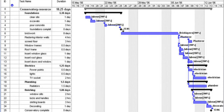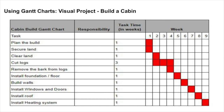A Gantt chart breaks down a production process into all of its key components. Here we have a typical Gantt chart. I have an example of a cabin build. If we ask ourselves what are the things required in order to build a cabin: first, we plan it; second, we get a piece of land; third, we clear some land; fourth, we cut some logs; fifth, we remove the bark from the logs; sixth, we install a foundation or floor; seventh, we build the walls; eighth, we install the windows and doors; ninth, we install a roof; and tenth, we install a heating system. This is for illustrative purposes only — I don't build very many cabins — but you'll get the gist.